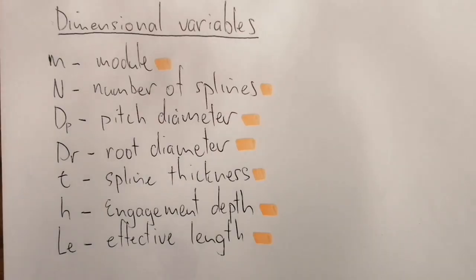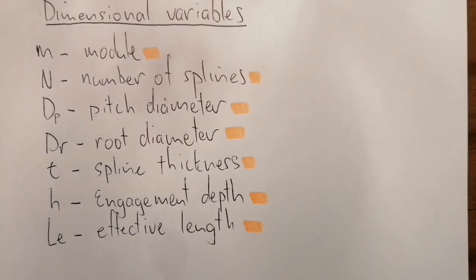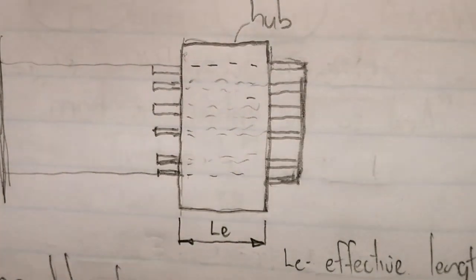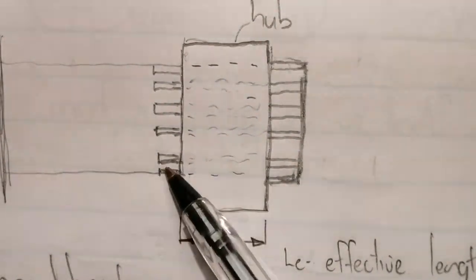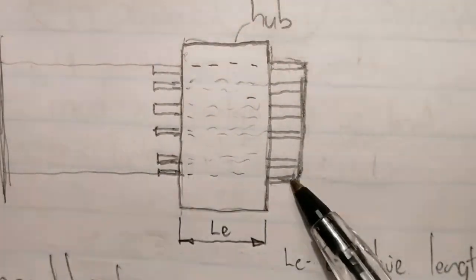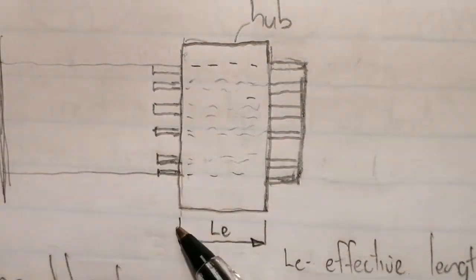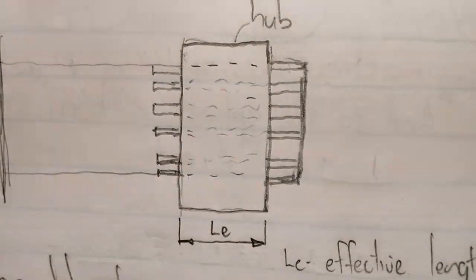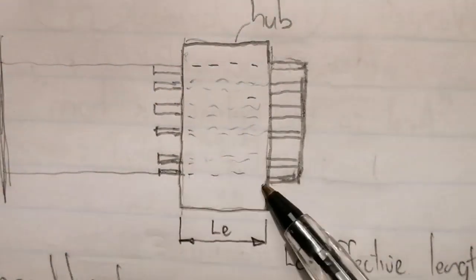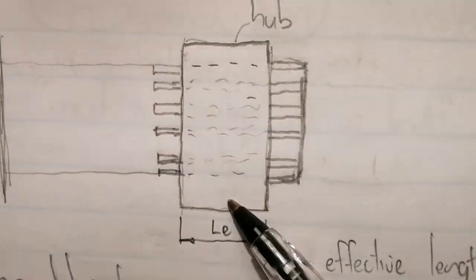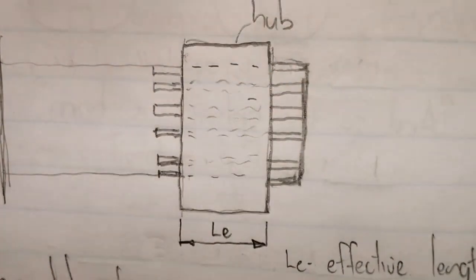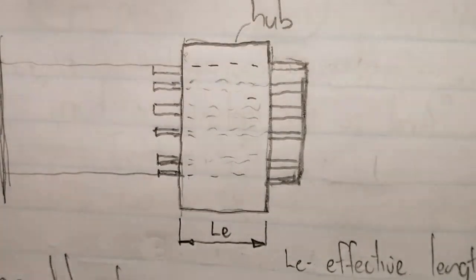The effective length is the length where the spline and the hub make contact based on their respective lengths. Here is a drawing showing the effective length — we have the length of the hub and the length of the splines. The total length of the splines is not in contact with the hub; only a certain length, known as the effective length, is in contact. Thus it is dependent on the length of the hub. If the hub is longer than the splines, then the effective length will be on the splines — it's a vice-versa type of situation.